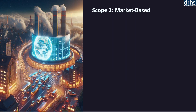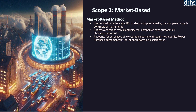Now let us discuss the market-based methodology for measuring scope 2 emissions. The market-based method is one of the two primary approaches recommended by the Greenhouse Gas Protocol. Unlike the location-based method, which uses average grid emission factors, the market-based method considers the specific emissions associated with the electricity that an organization has chosen to purchase. It is particularly useful for companies that actively engage in sustainable energy procurement and seek to influence their emission profile through their purchasing decisions.